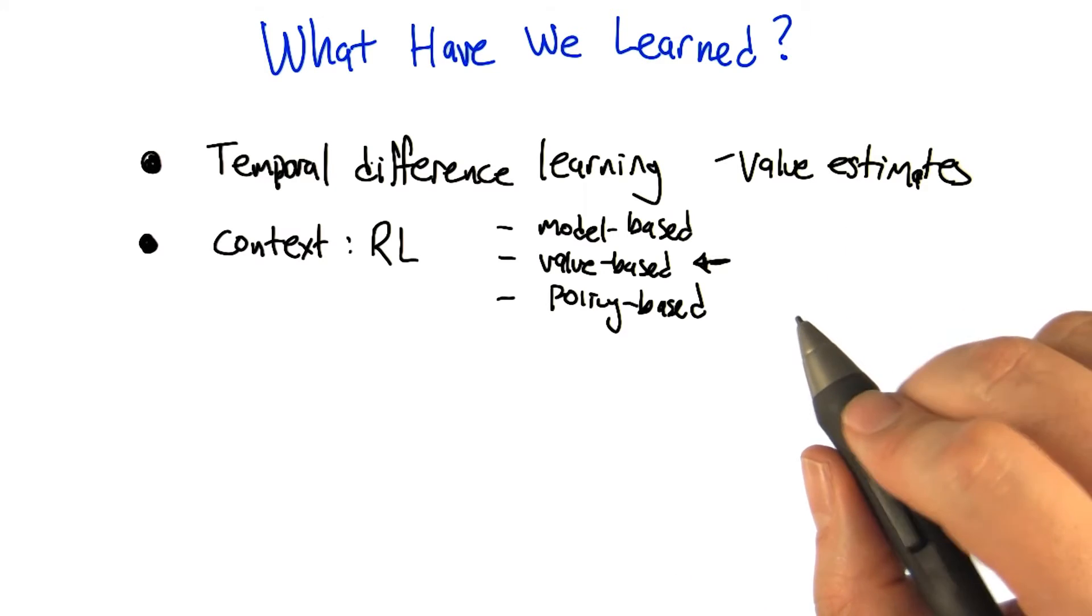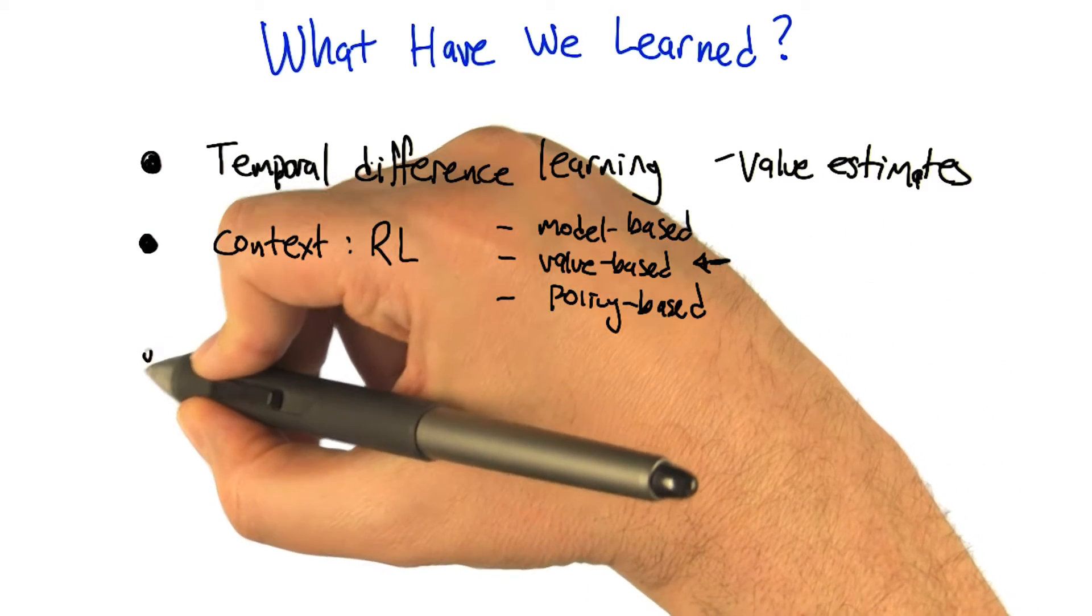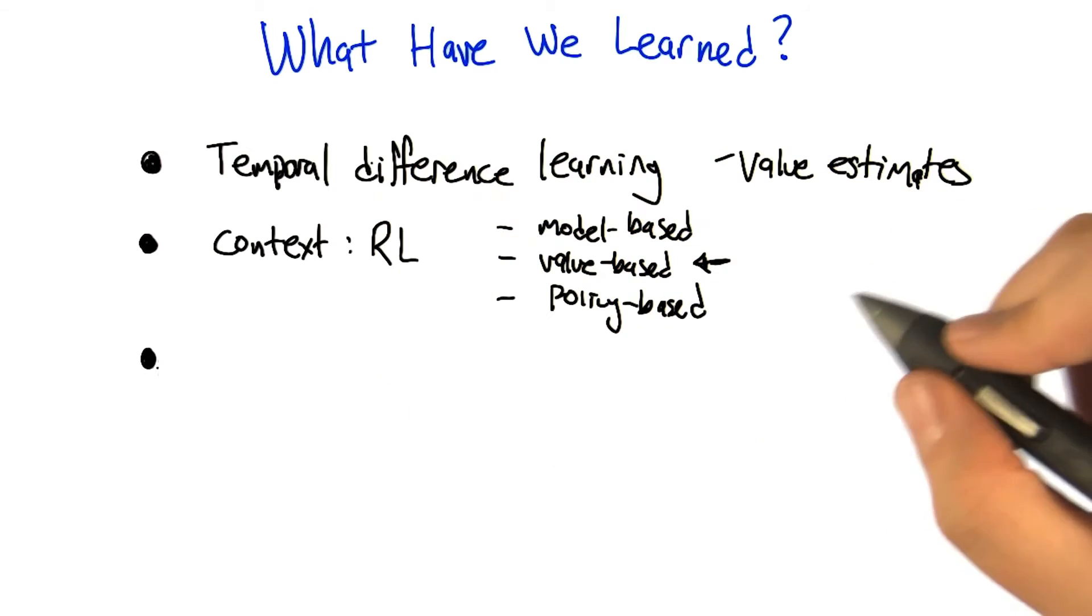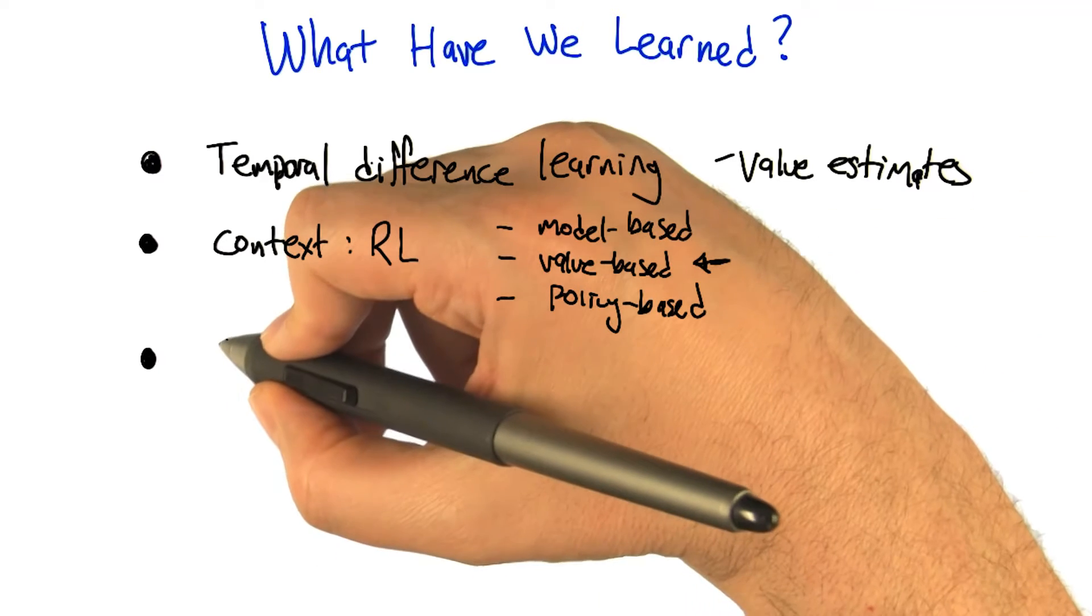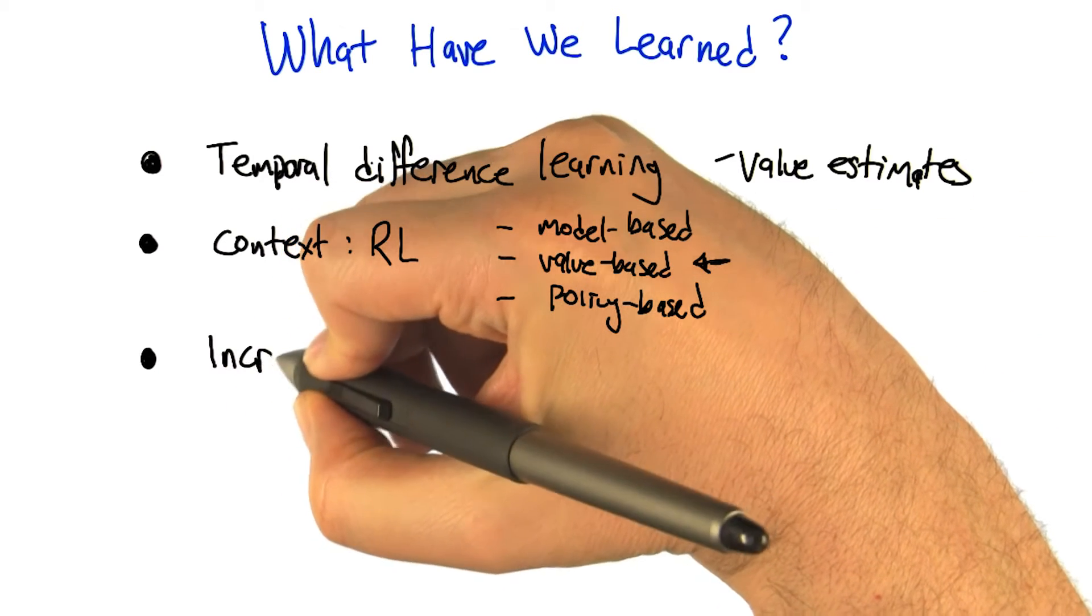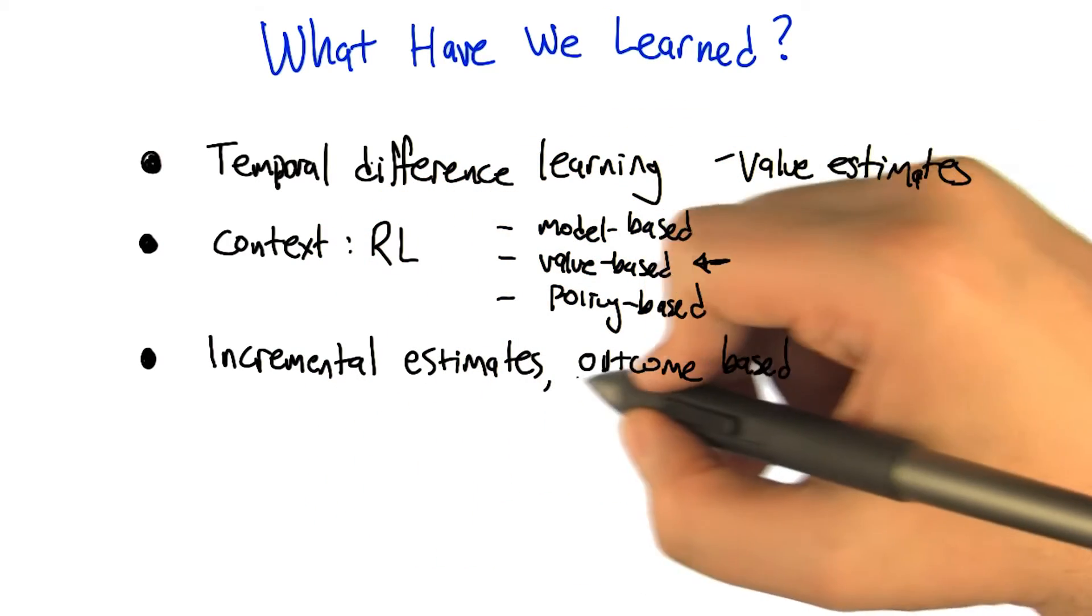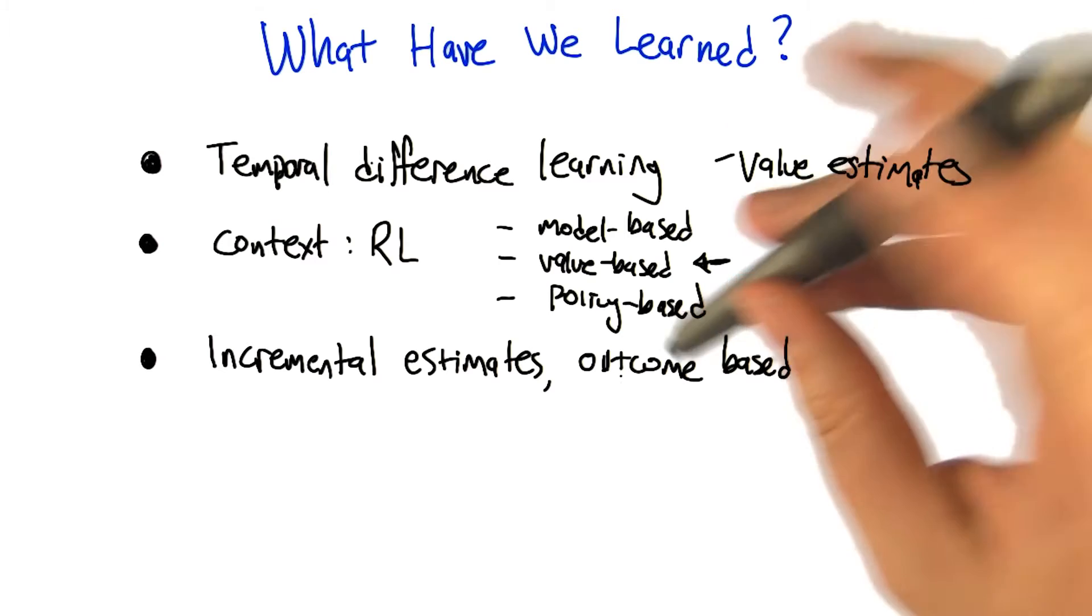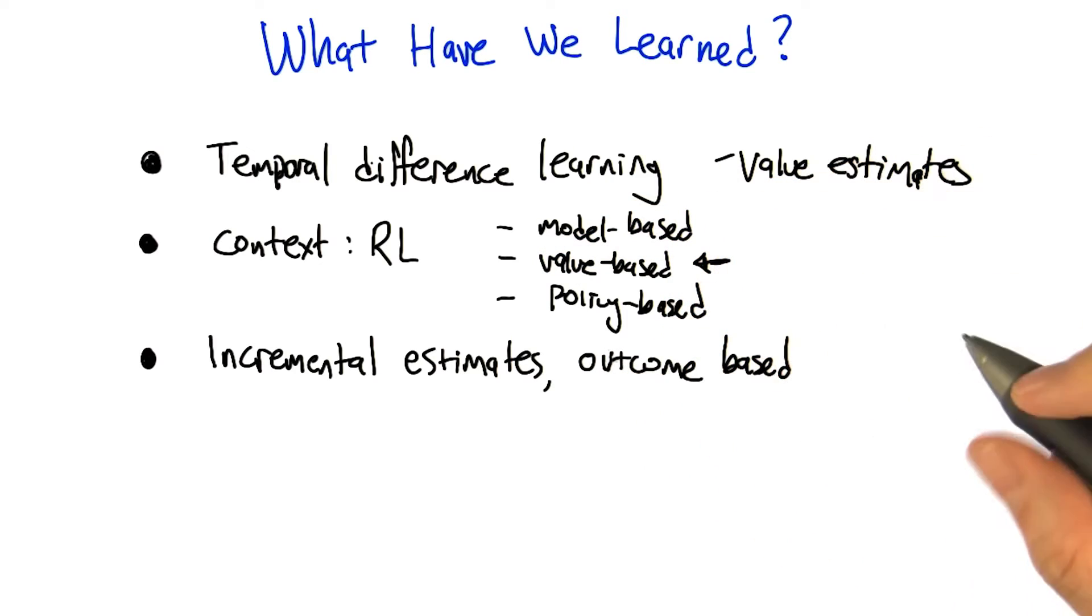All right, and then we dove into the update rules themselves, so what do we talk about there? Well, we actually derived this kind of incremental way of building up estimates of the values. And I think you called it outcome-based. And all that really means is that you actually look at the outcomes of what you experience from different trajectories and episodes through the space, and you use that to build up your estimate of what the values of various states are.